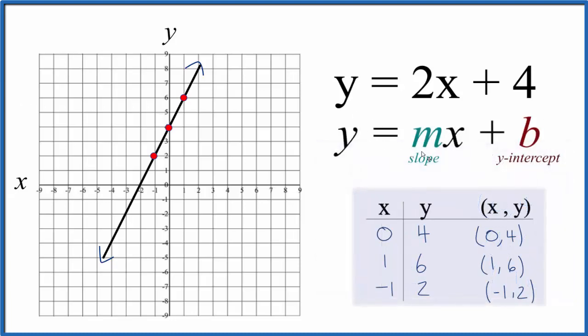So we have y equals mx plus b. And this b over here, this is the y-intercept. It's where the line will intercept the y-axis. And b is 4. So we go to the y-axis here, and we find 4 right there.